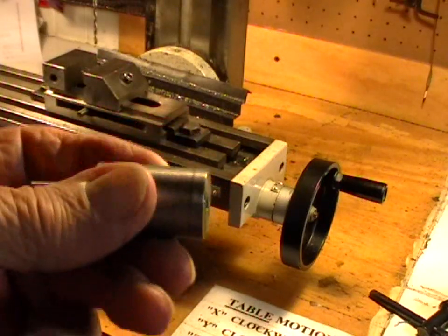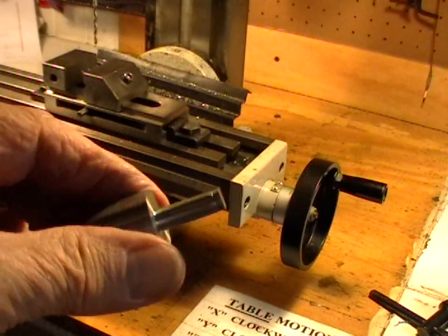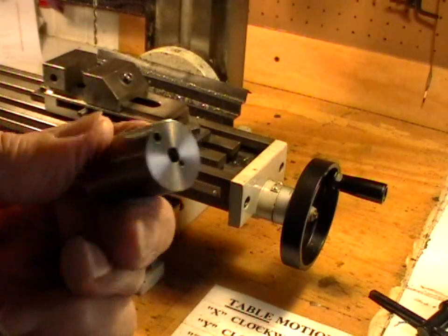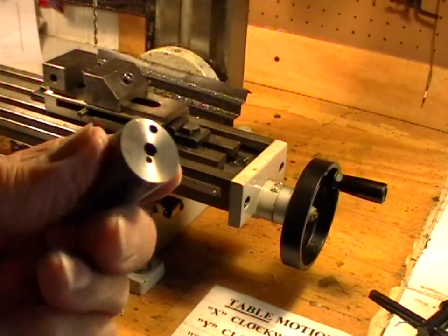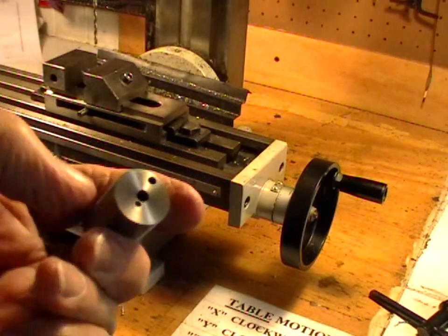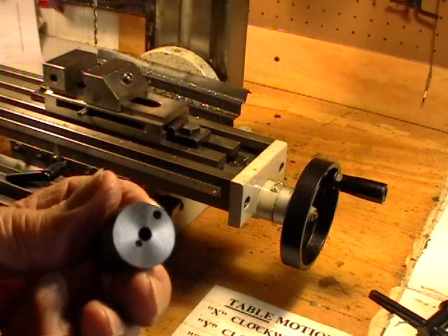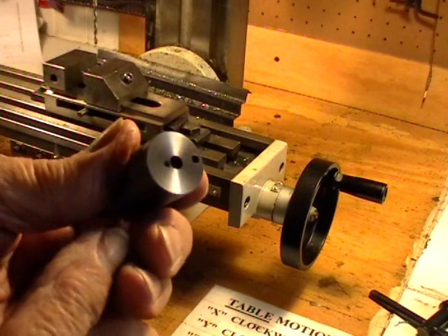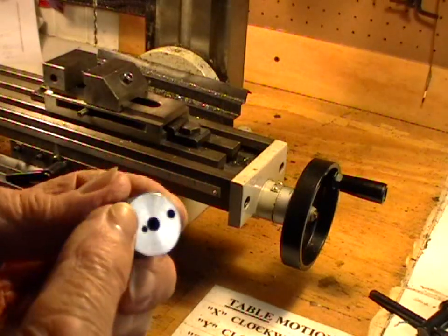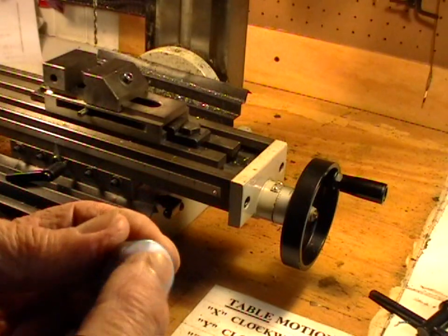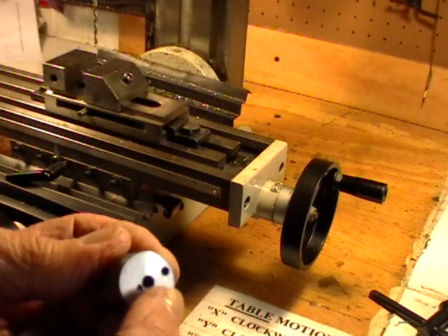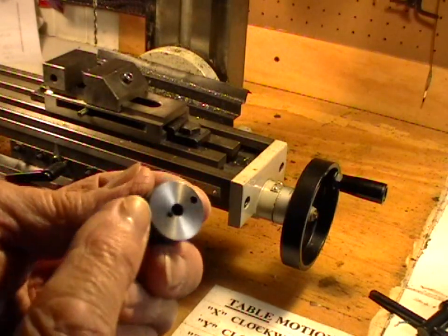Now this is the finished turned and drilled blank, ready to go into the four jaw chuck for the machining of the timing eccentric.